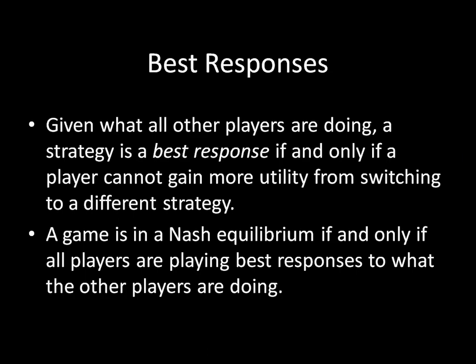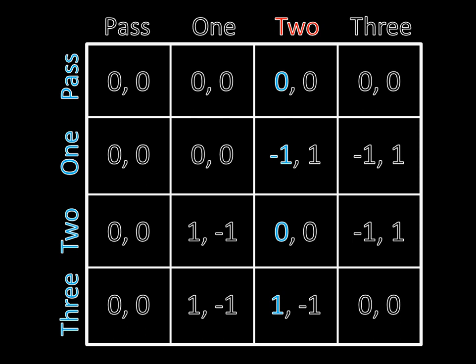The way we can mark best responses in a game is by isolating a single player's strategy and figuring out what the other player should do in response. I have isolated player two's move — in this case, she's playing two units. Now we need to look through all of player one's payoffs: a zero, a negative one, a zero, and one, and mark which of those payoffs is the greatest. It's obviously the one. If player one sends out three units and player two is only sending out two units, player one is going to win. In other cases he's either going to draw or lose. So this is the best response, and we mark it with an asterisk.